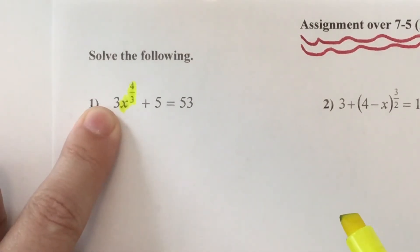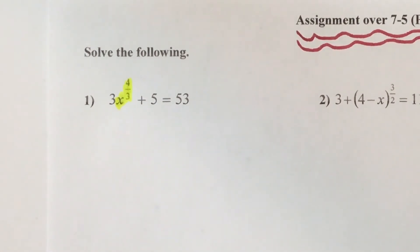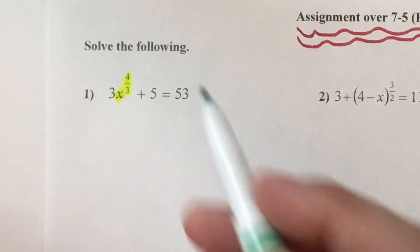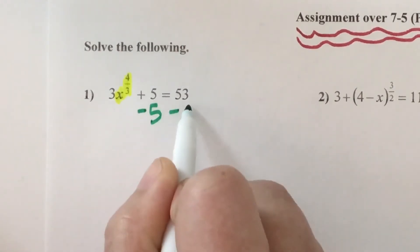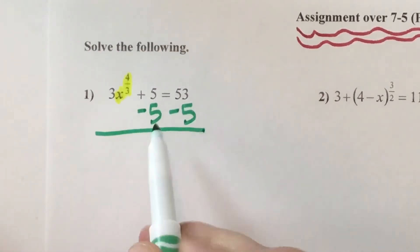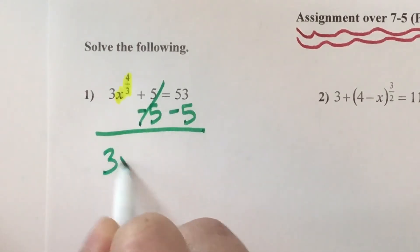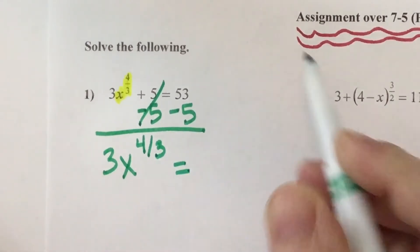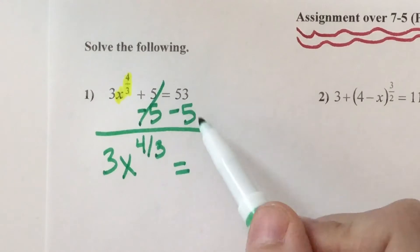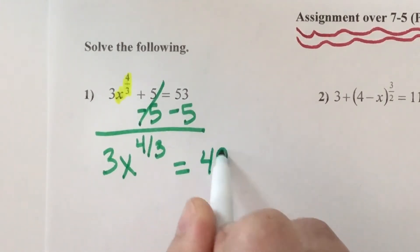I need to get rid of the 3 and I need to get rid of the plus 5. What do you think we would do first? Get rid of the addition of 5 — to get rid of addition of something, I subtract it. So 5 minus 5 is 0. The 3x to the 4/3 comes down, and 53 minus 5 is 48.